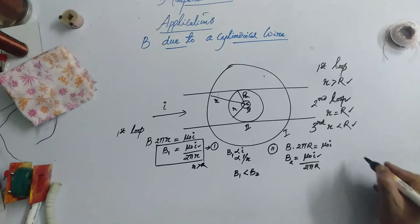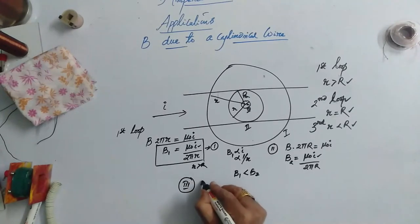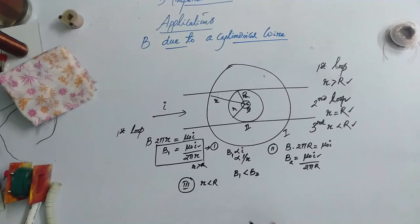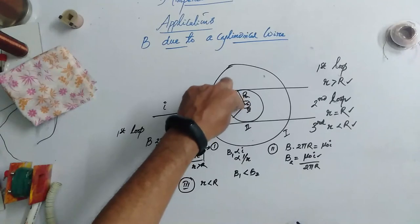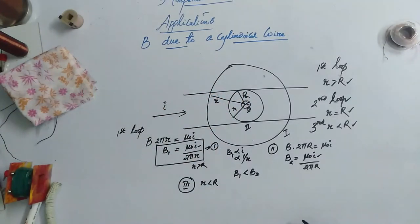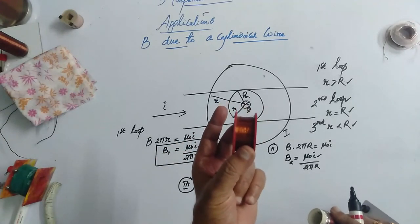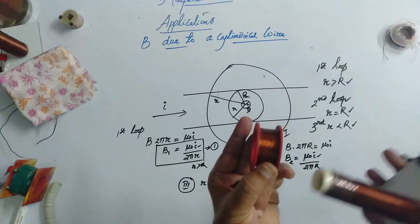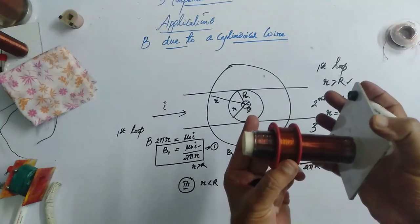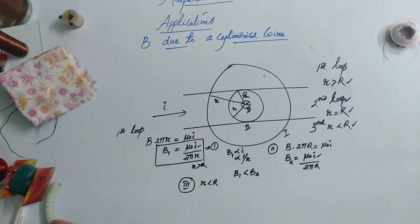Now let us do it for B3. That is R is less than R. Now this current, the current threaded in this circle only you have to find. If you want to find, suppose this is solenoid or this is a cylindrical conductor, the entire current is not passing through, but some portion of current is passing through it. So that current I have to take.